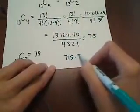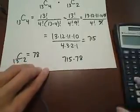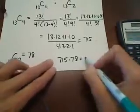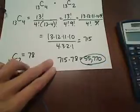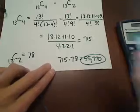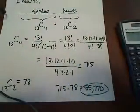Okay, so really our answer here is 715 times 78, and so I end up getting 55,770 hands that will have this situation: 4 spades and 2 hearts exactly.